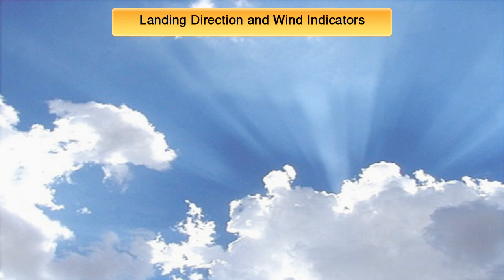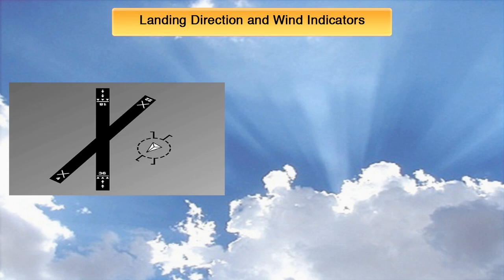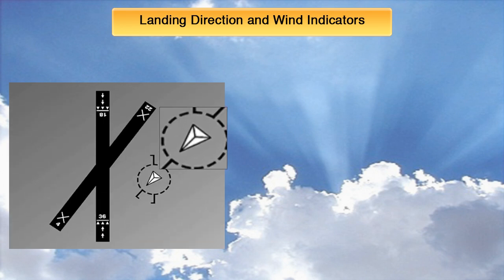Okay, landing direction and wind indicators. In general, there are various types of wind indicators. With the FAA you're going to deal mainly with two. And if you see figure 50, you can see that that is a tetrahedron.